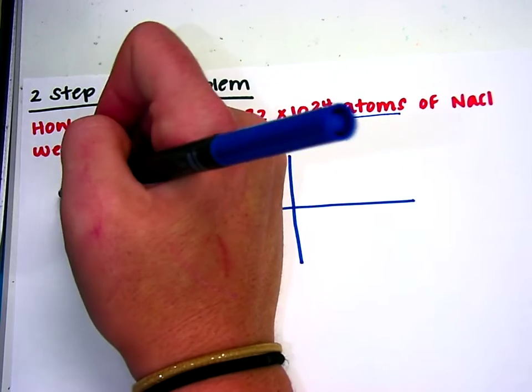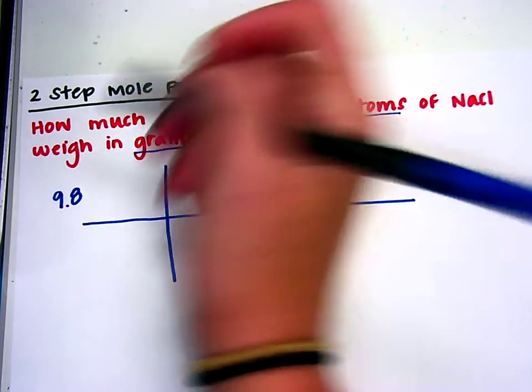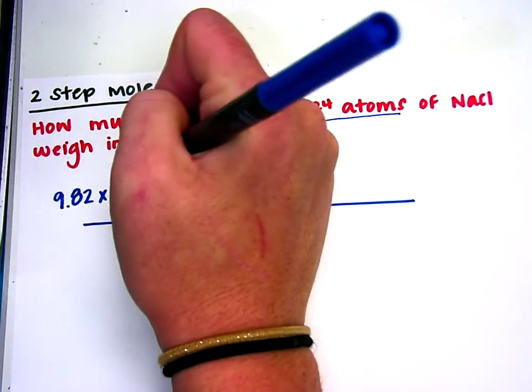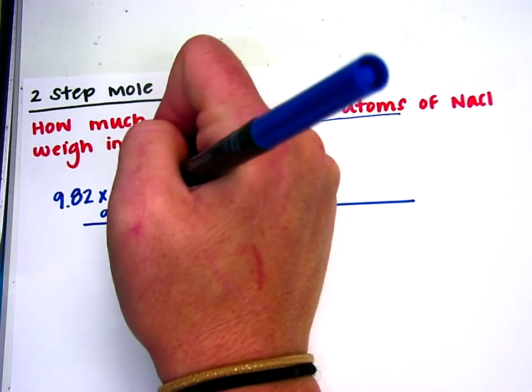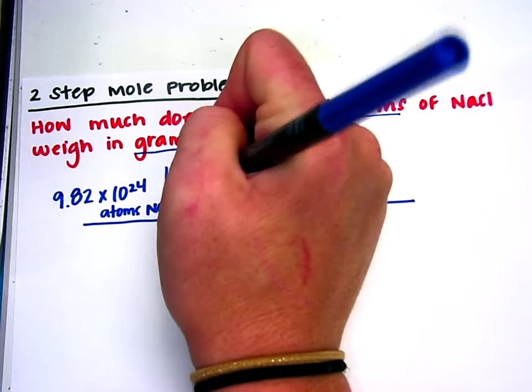So I'll start with my given, I'll go ahead and plug that in, 9.82 times 10 to the 24th, and my units here are atoms of NaCl.